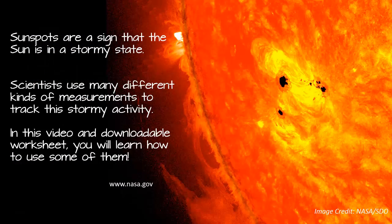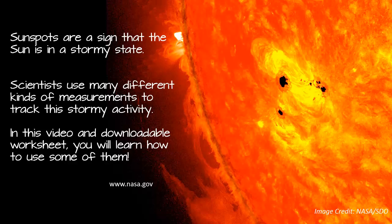Sunspots are a sign that the sun is in a stormy state. Scientists use many different kinds of measurements to track this storm activity. In this video and downloadable worksheet, you're going to learn how to use some of them.